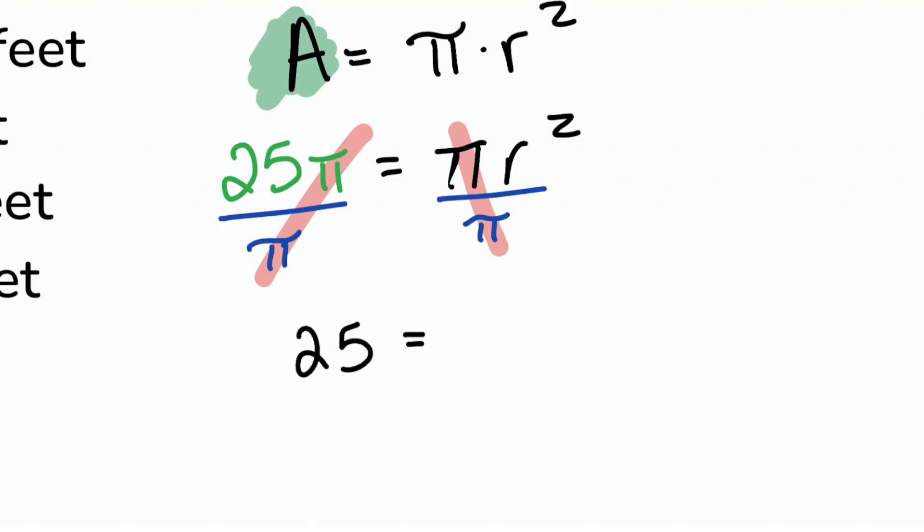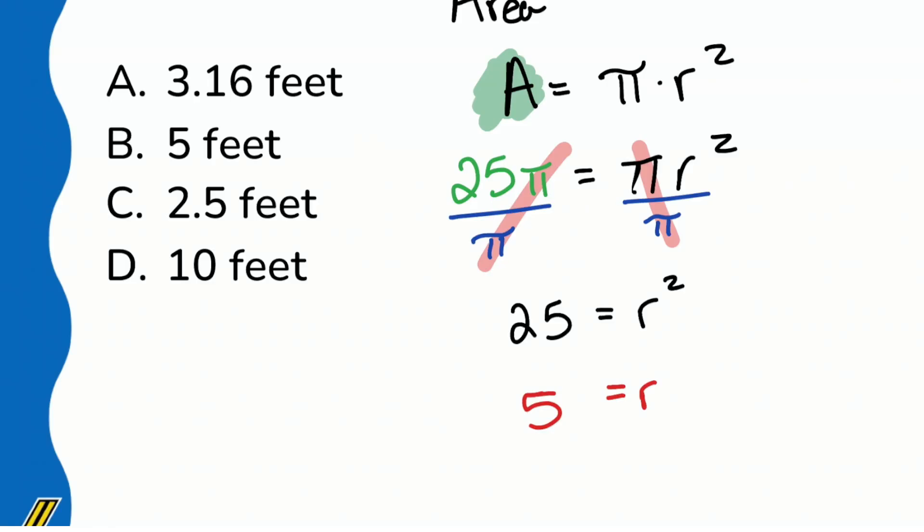So we have 25 equals r². This shouldn't be crazy either because we're asking ourselves, some number squared equals 25. Well, what squared is 25? Well, I think we understand that that's going to be positive 5 since we're dealing with real-world stuff. We won't include negative 5. So we have r equals 5.